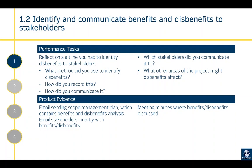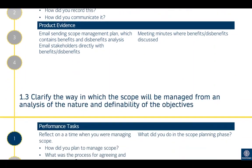Also consider which stakeholders you communicated to and what other areas of the project dis-benefits might affect. Product evidence would be an email sending the scope management plan containing a benefits and dis-benefits analysis, or an email where you communicated directly with stakeholders to outline the benefits and dis-benefits, and meeting minutes where benefits and dis-benefits are discussed.